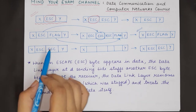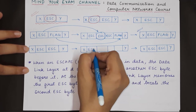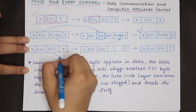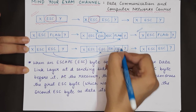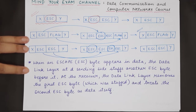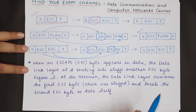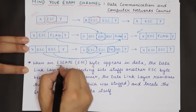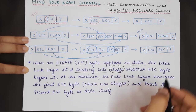The last scenario is when the escape byte pattern is repeated in the data. Similar to the previous case, two escape bytes are added — one for each pattern appearing. One escape byte is added for each escape as well as flag pattern that appears in the original data, and at the receiver end each inserted escape byte is removed.